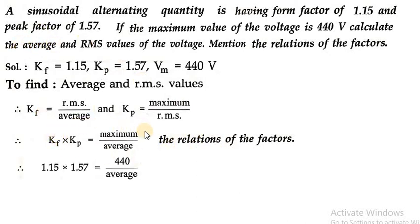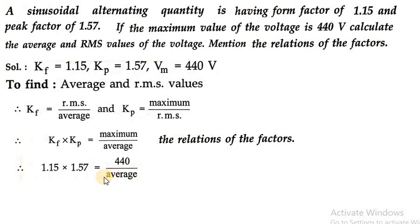Using the equation Kf × Kp = maximum / average, we can find our first parameter, average value. Substituting the values: 1.15 × 1.57 = 440 / average. Solving, the average value we are getting is 243.7 volt. So the first parameter, average value, equals 243.7 volt.